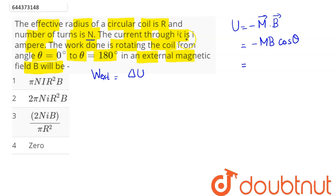And here magnetic moment for N turns, let's say I current and circular coil of radius R can be written as N into I into A. Area is for circular coil as pi R square into B into cos of theta.